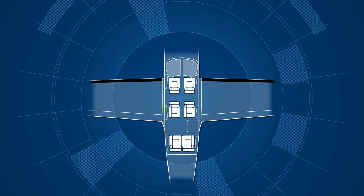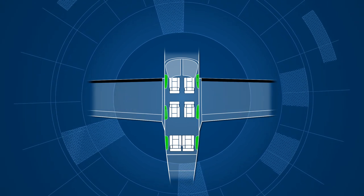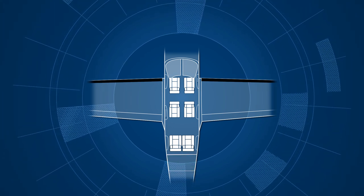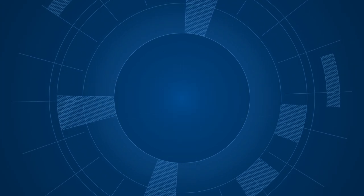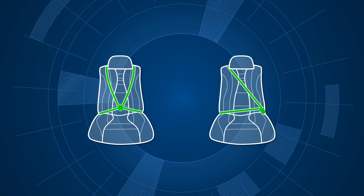To prepare for landing, passengers should stow the table and secure all loose objects in the cabin. Luggage should be stowed in the appropriate location, not left in the cabin. Each passenger should make sure that their seat belt is fastened tightly.